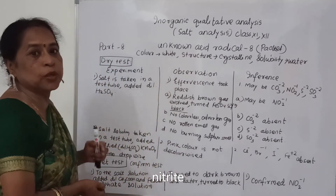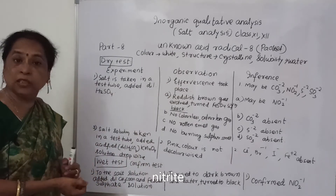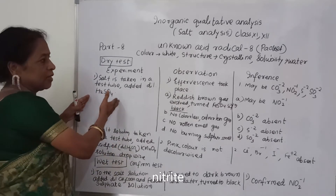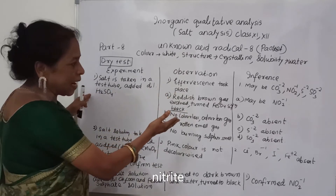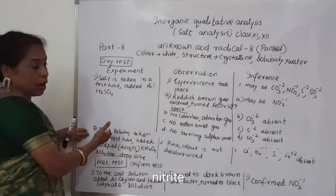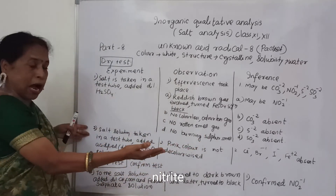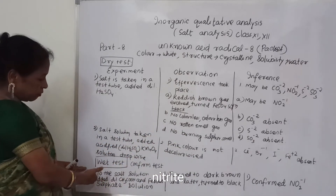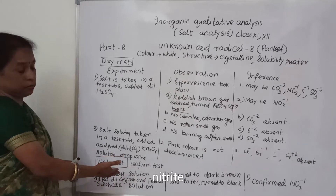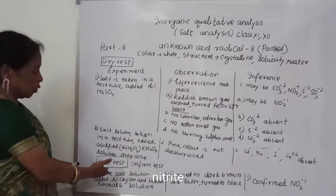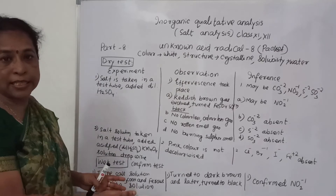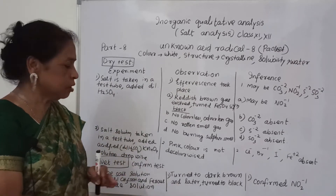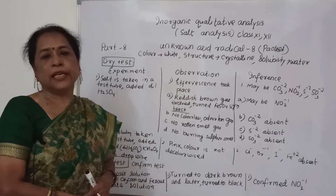I will now proceed to other confirmed tests. In the dry test, the maybe was nitrite. Chloride, bromide, and iodide are confirmed absent. For the wet test for bromide: to the salt solution, dilute acid and ferrous sulfate solution were added — it changed to dark brown then black — so it is confirmed nitrite.